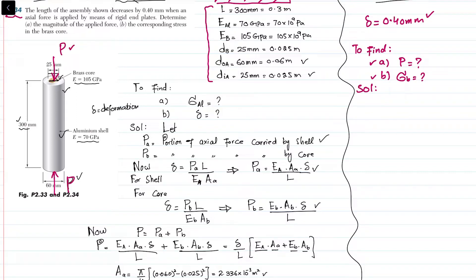When the P load is applied on this assembly, the portion of axial force carried by the shell equals Pa, and the portion carried by the brass core is Pb. The deformation delta equals Pa times L divided by Ea times Aa for the shell. From here we can get Pa equals Ea Aa delta divided by L.